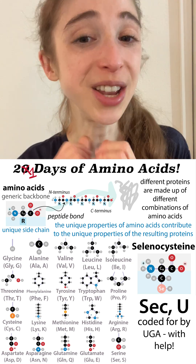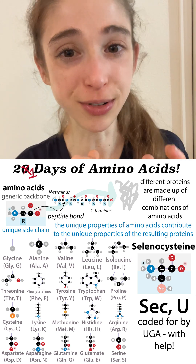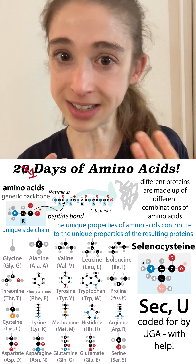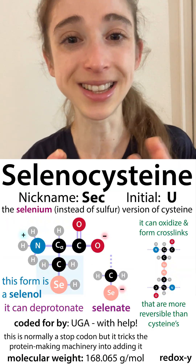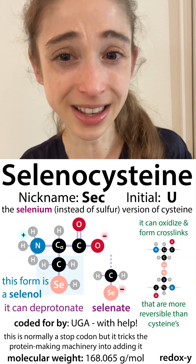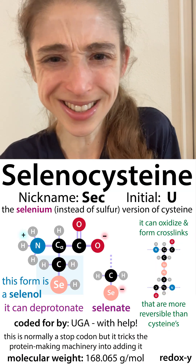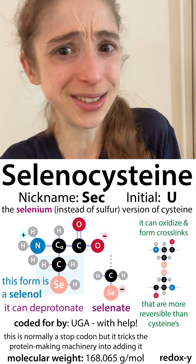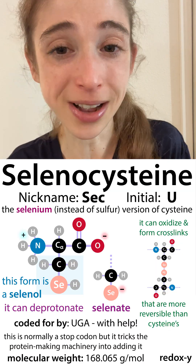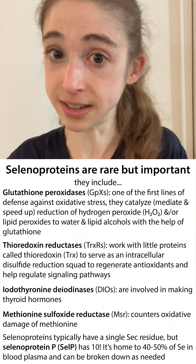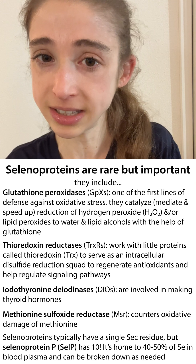Surprise! There's actually a 21st proteinogenic amino acid in humans: selenocysteine. I didn't lie to you before because selenocysteine isn't a common amino acid, but it is an important one.